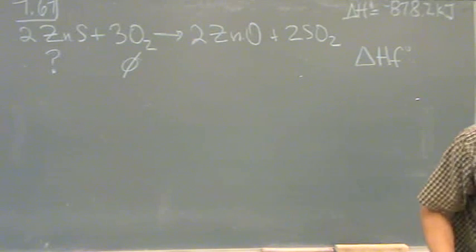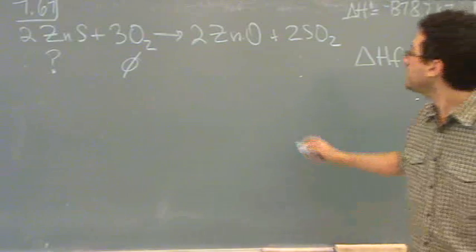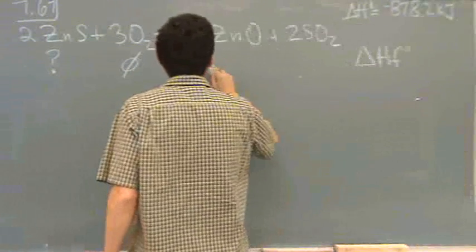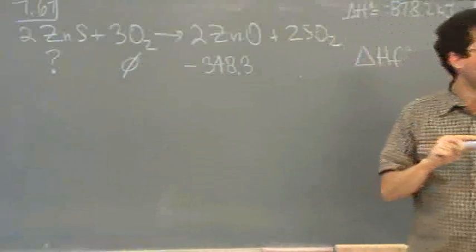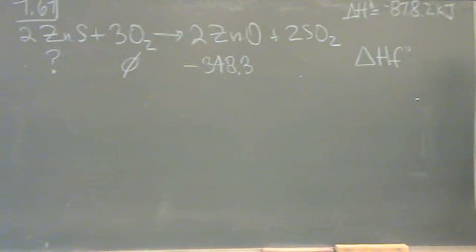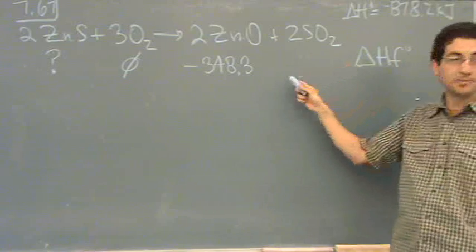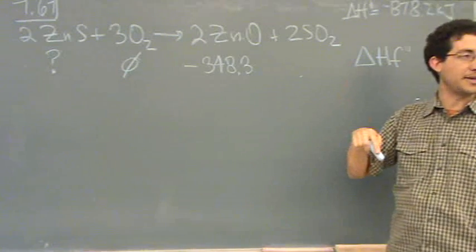The zinc oxide minus 348.3. Are these like an appendix D or something? This is an appendix. If you were taking an exam, they'd either be in the question or on the back page.